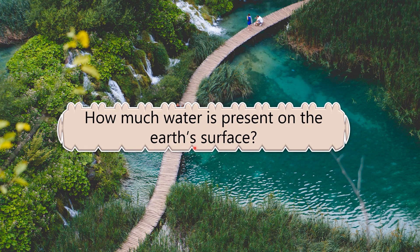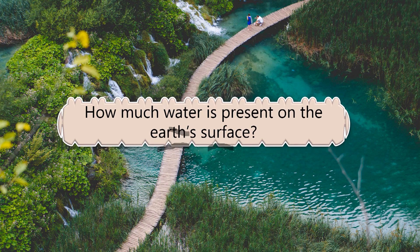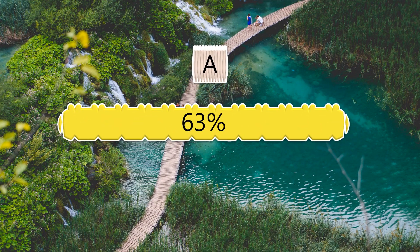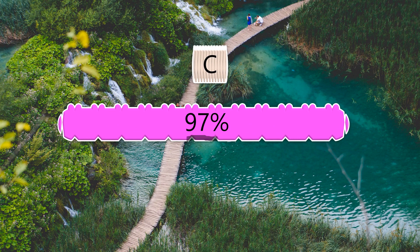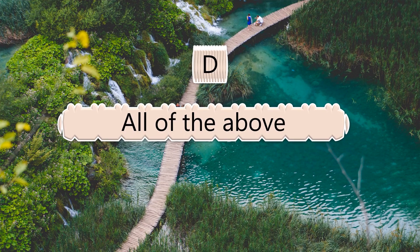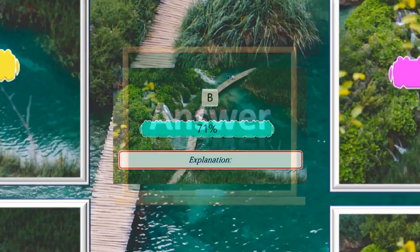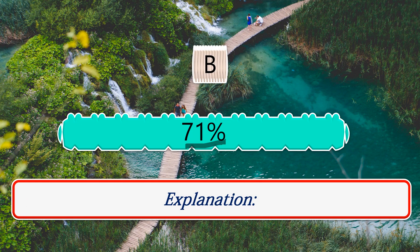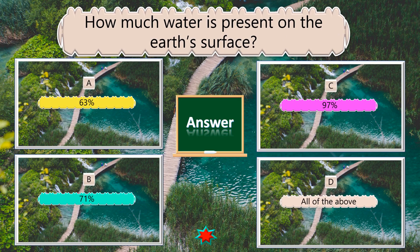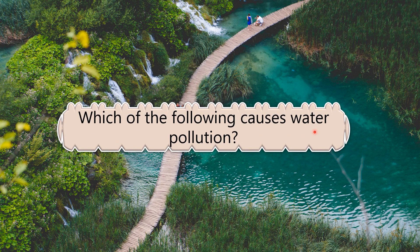How much water is present on the Earth's surface? Options: 63%, 71%, 97%, all of the above. The answer is 71%.